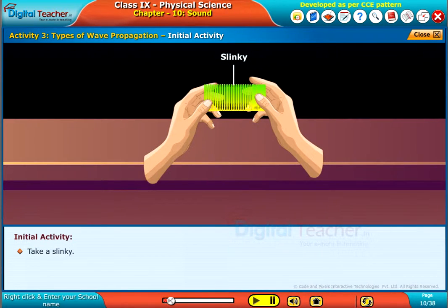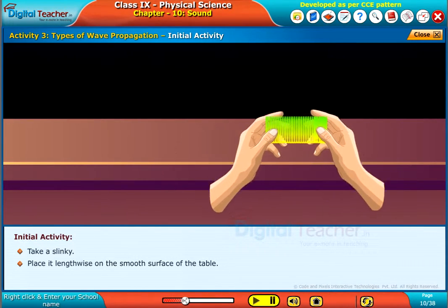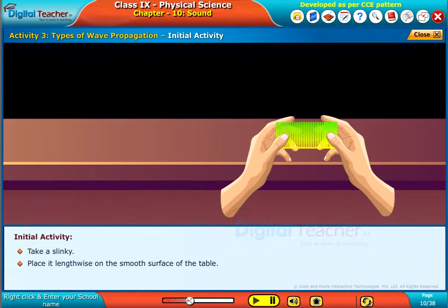Take a slinky. Note, a long flexible spring is called slinky. Place it lengthwise on the smooth surface of the table.